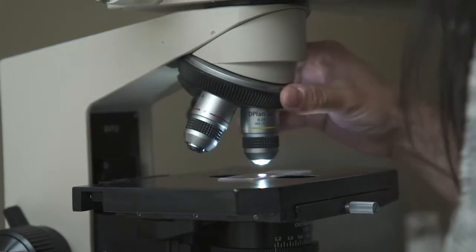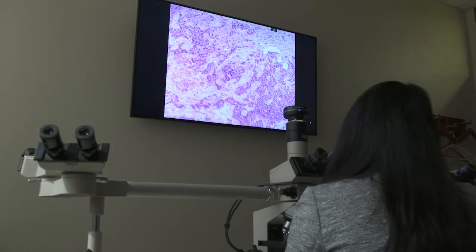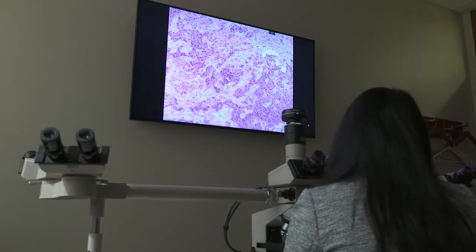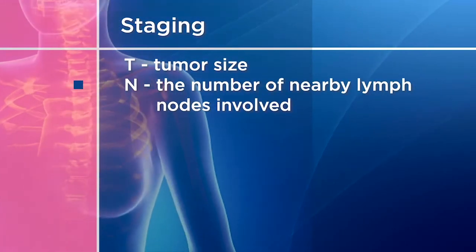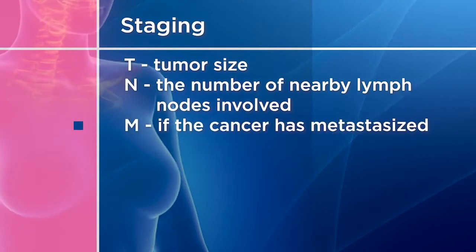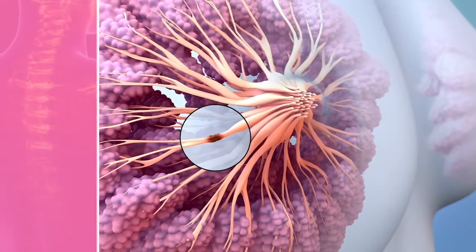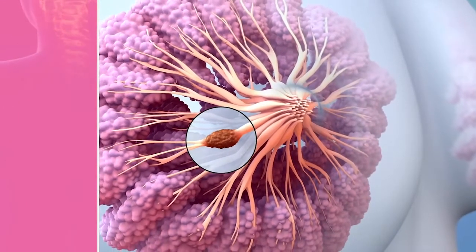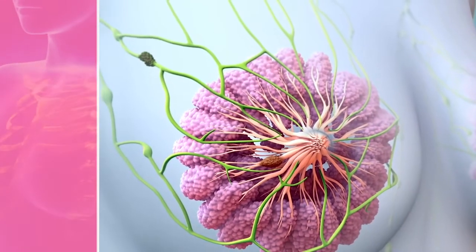Your healthcare provider will review your pathology report, which has the results of the removed tissue. The stage of your cancer is based on the size of your tumor and if it has spread out of the breast tissue. It is described by the following letters: T for tumor size, N for the number of nearby lymph nodes involved, and M if the cancer has metastasized or spread to other organs. The type of treatment you will need depends on the stage, location, and size of your tumor, and how much cancer may have spread.